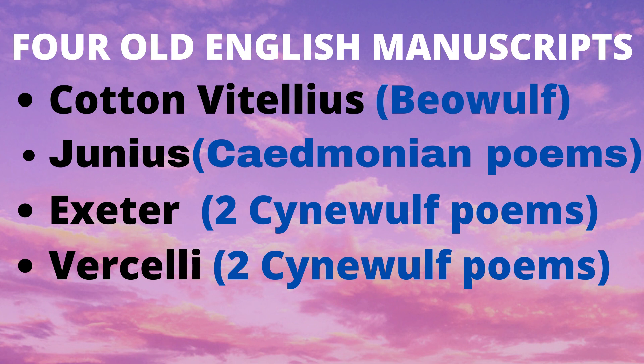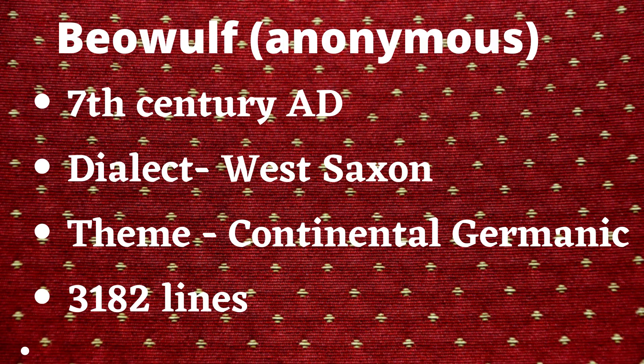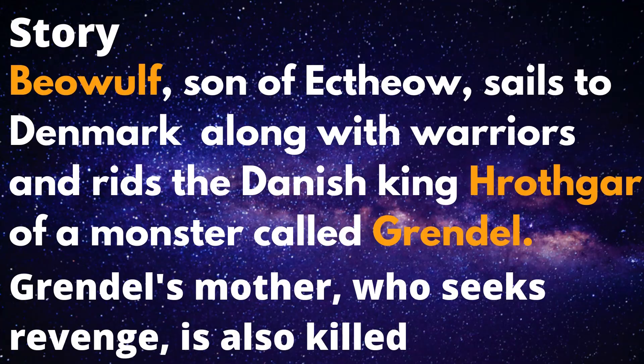Beowulf is the oldest epic, written in the 7th century AD, and the author of Beowulf is unknown. The dialect of this text is West Saxon and the theme is Continental Germanic. Beowulf consists of 3,182 lines.